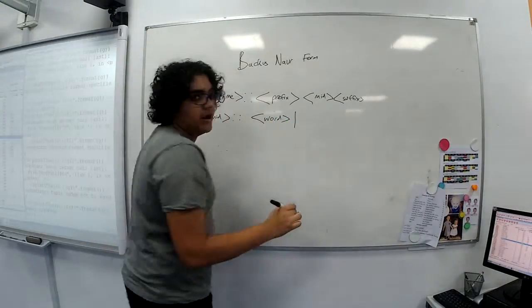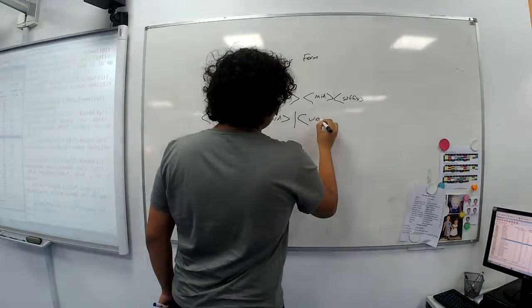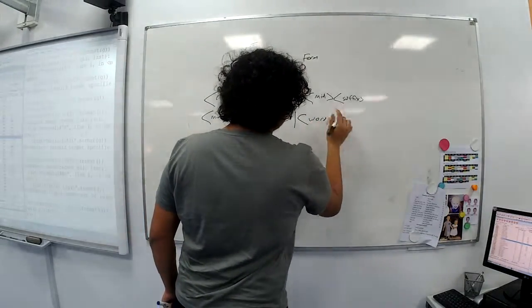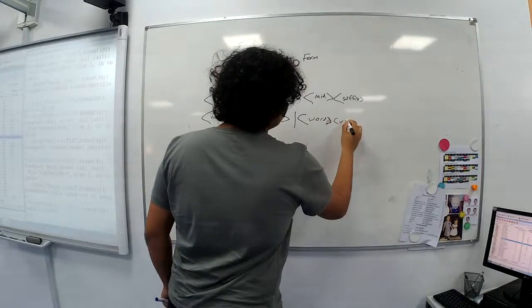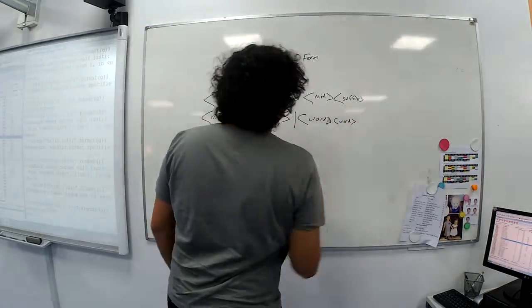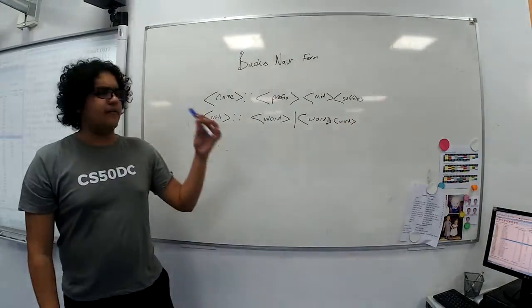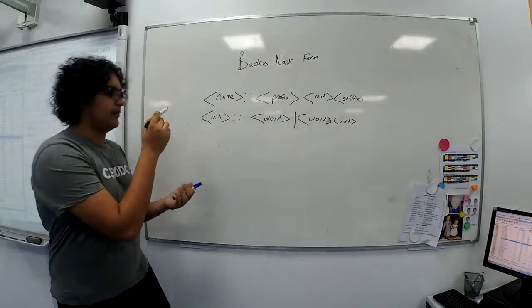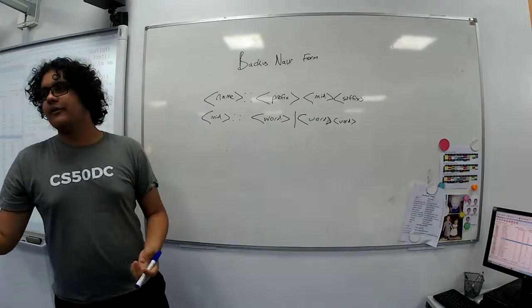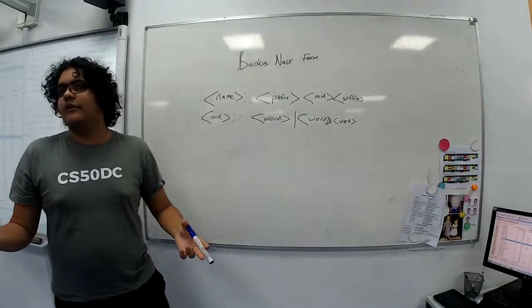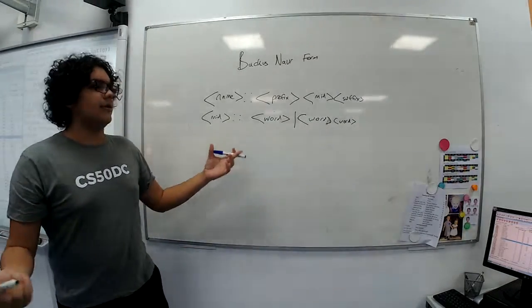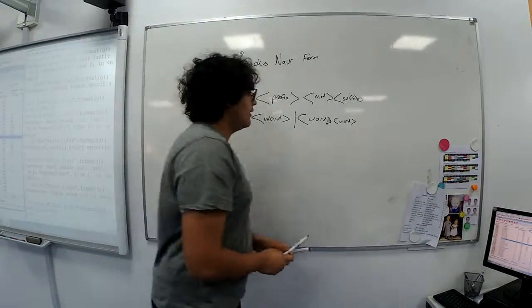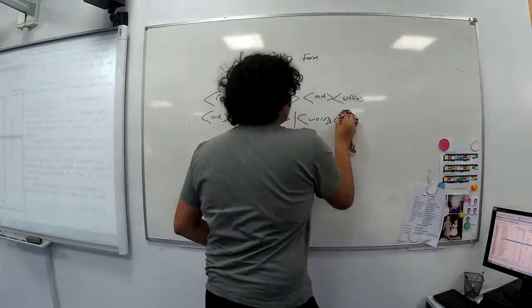Or, so we use a pipe to designate or. Two words. A word. And then word again. Okay, that's inefficient, because we need to have, we need to say, we need to have so many or statements. We need to go, okay, it could be one word, two words, three words, four words. What if you have a guy with 9,000 names? It's not going to work. You're not going to be able to define all of that. So what we can actually do is define it recursively.